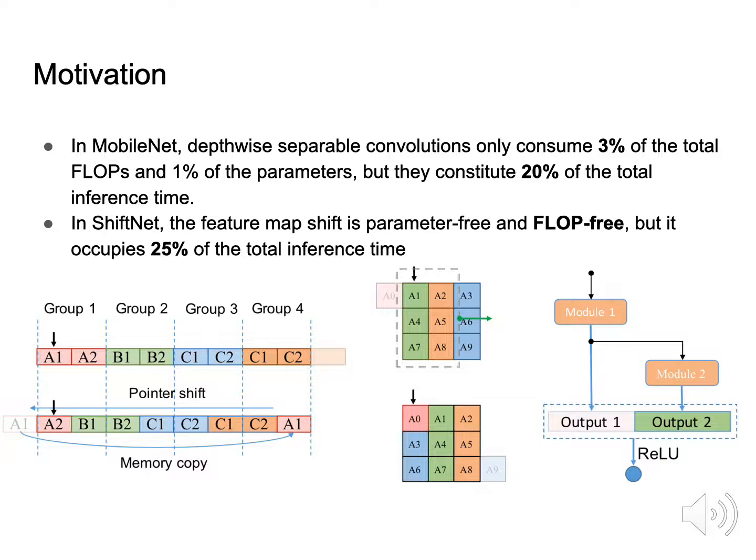As well, in ShiftNet, the feature map shift is parameter-free and FLOP-free, but it actually occupies 25% of the total inference time. Therefore, we propose three operations that only move the pointer in memory space but avoid memory copy, thus very fast.